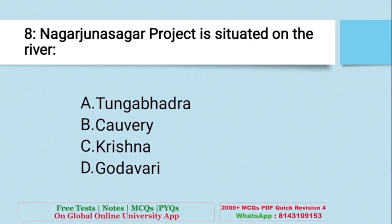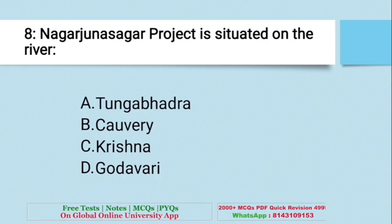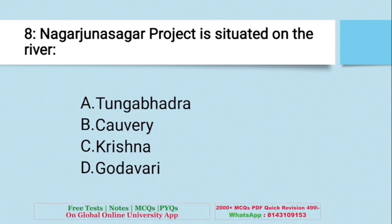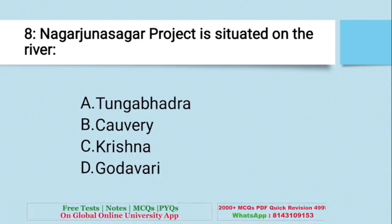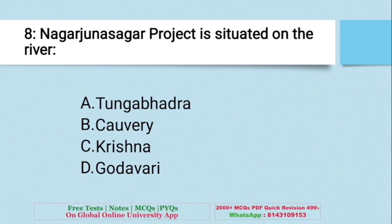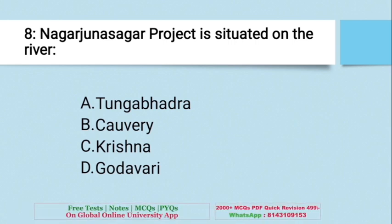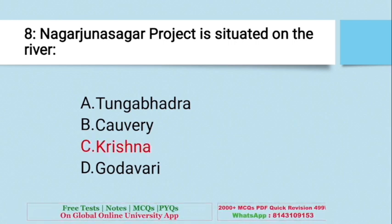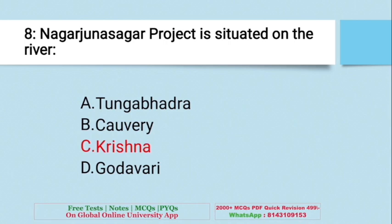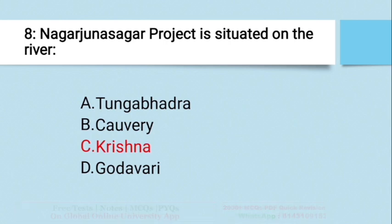Question: Nagarjuna Sagar Project is situated on which river? A. Tungabhadra, B. Kaveri, C. Krishna, D. Godavari. The right answer is C — Krishna. Nagarjuna Sagar Project is situated on the Krishna river.